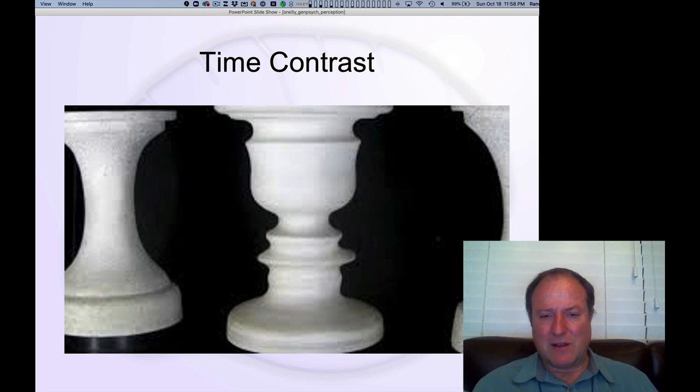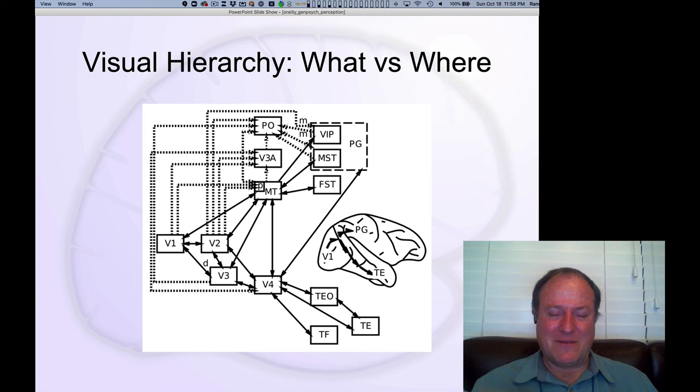And so if you stare at this long enough, at one time you see the chess pieces, right? And then all of a sudden your brain switches and now you see the faces, these funny little goofy faces here. So again, your brain kind of has that sensitivity to changes over time. Neurons get tired. They want to see something new. You want to see the new thing. That's all really cool.